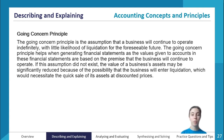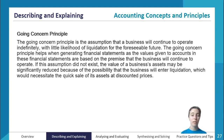If this assumption didn't exist, the value of a business's assets may be far less, because if the business were likely to end and be liquidated, its assets would need to be sold quickly, probably at discounted prices, and would therefore not be deemed as valuable. The going concern principle assumes the business will keep operating, so all assets are treated as being worth their full amount.